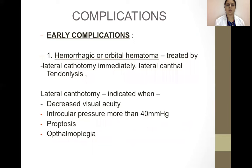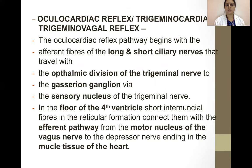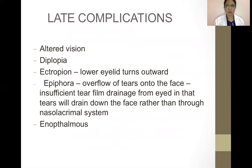Complications of orbital fractures: early complications include retrobulbar orbital hematoma, requiring lateral canthotomy when there is decreased visual acuity, intraocular pressure greater than 40 mm, proptosis, or ophthalmoplegia. The oculocardiac reflex — also called the trigeminocardiac or trigeminovagal reflex — is a very important complication. Its pathway begins with afferent fibers of the long and short ciliary nerves traveling with the ophthalmic division of the trigeminal nerve to the Gasserian ganglion via the sensory nucleus of the trigeminal nerve. In the floor of the fourth ventricle, short internuncial fibers in the reticular formation connect with the efferent pathway from the motor nucleus of the vagus nerve to the depressor nerve endings in the heart muscle. Late complications include altered vision, diplopia, ectropion, epiphora, and enophthalmus. Thank you.